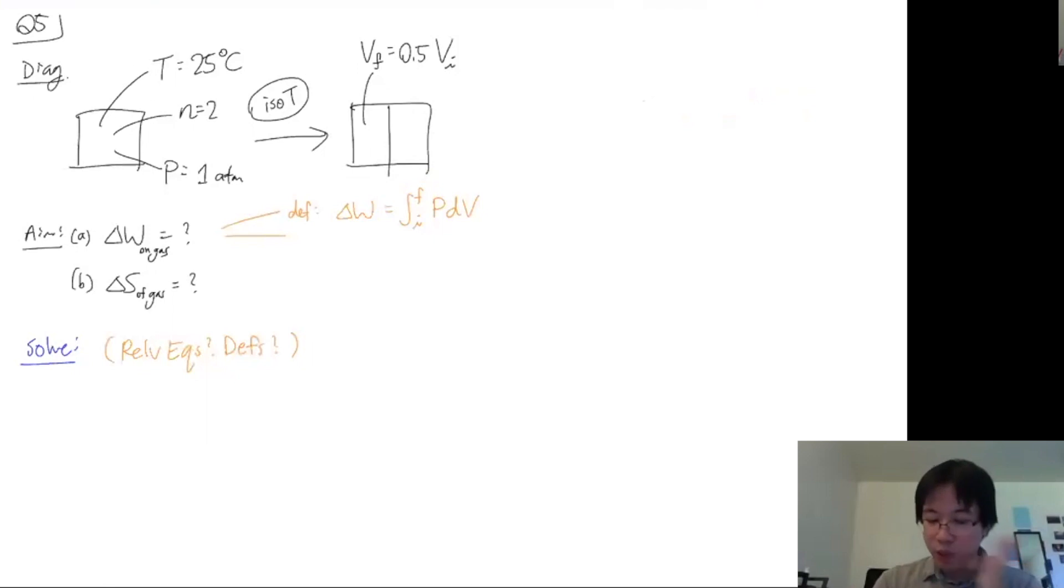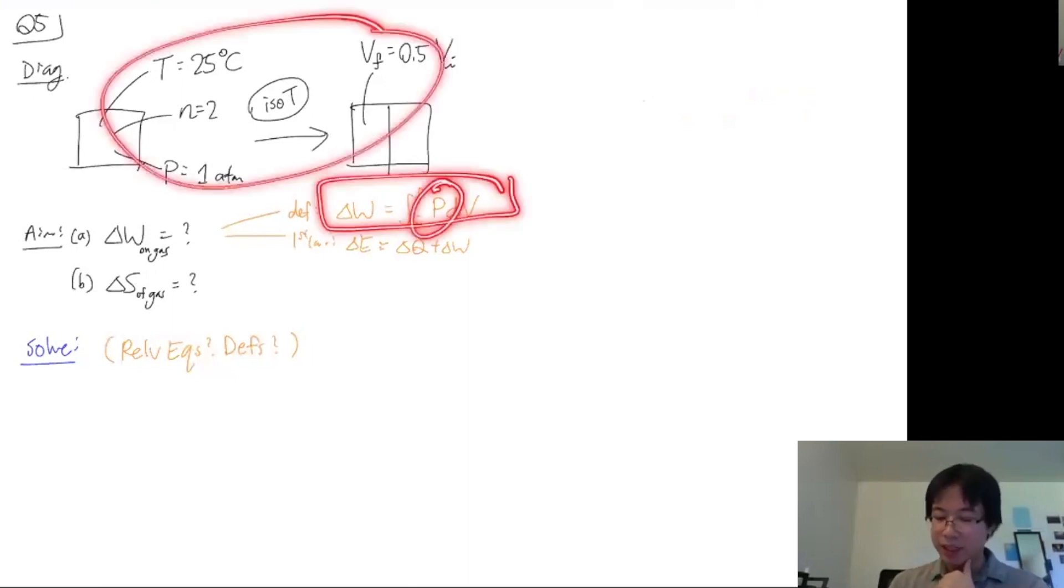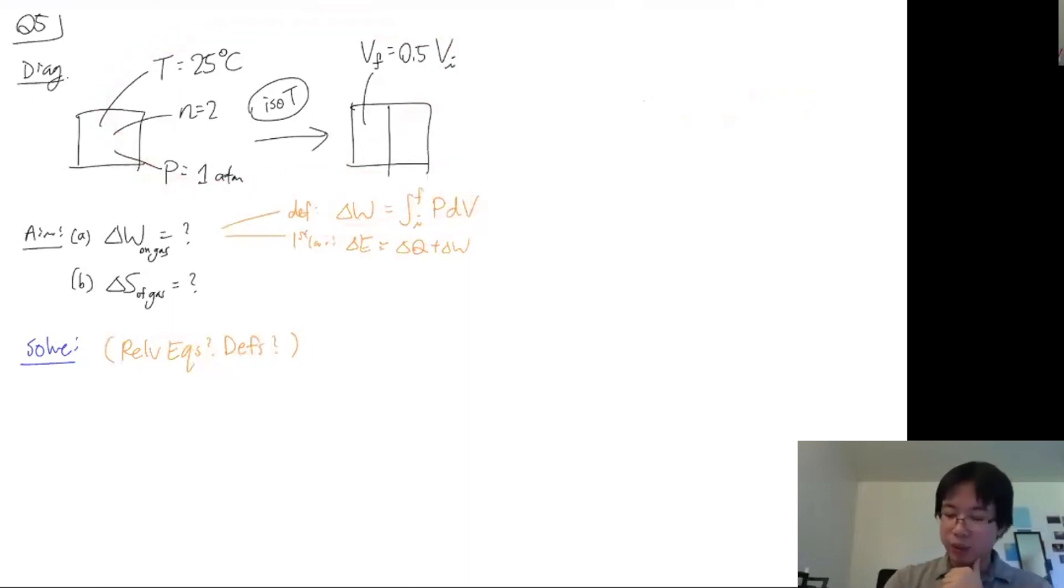Now with another one that relates, that has W in my mind, it's very fundamental as well. It's the formula, it's the first law. The first law which relates delta E to delta Q plus W. So which one should I use if I have these two in mind? Looks like probably the first one because this has a P in it, so it probably relates to this. This is less likely.